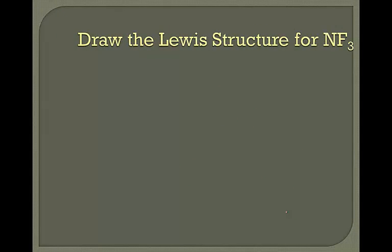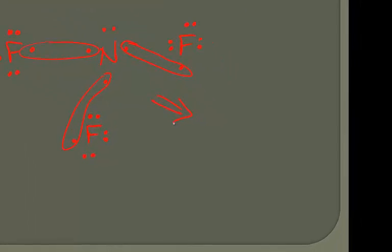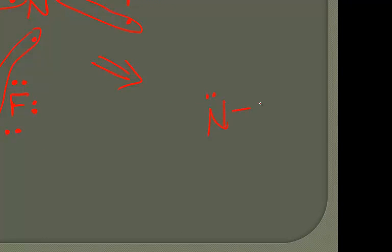Let's take a look at the Lewis structure for NF3. Nitrogen has five valence electrons, and fluorine has seven. There are three fluorines. So we'll see a sharing of electrons here, a sharing here, and a sharing here. NF3, nitrogen trifluoride, will have nitrogen in the middle, bonded to fluorine with its seven valence electrons, bonded to the second fluorine, and bonded to the third fluorine, each with their valence electrons.